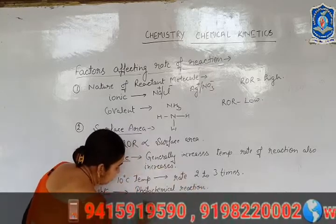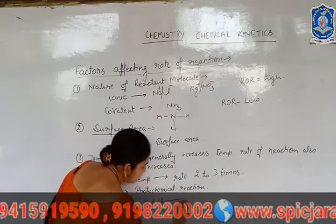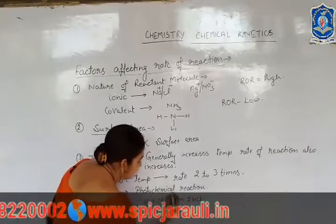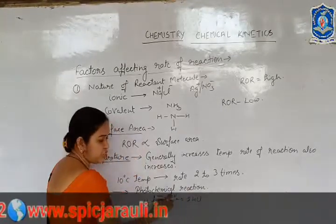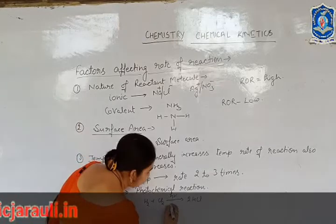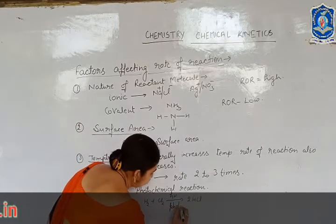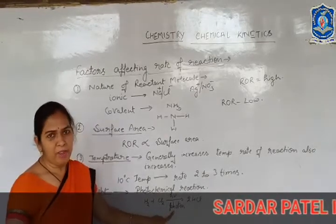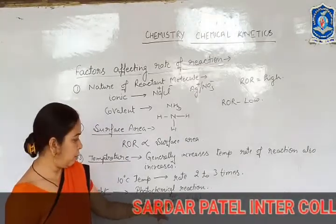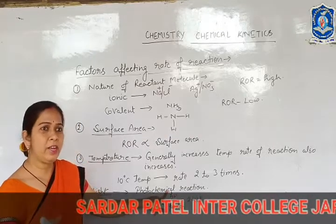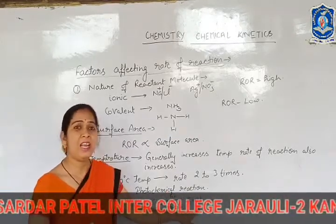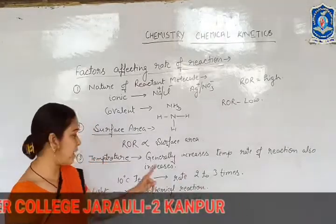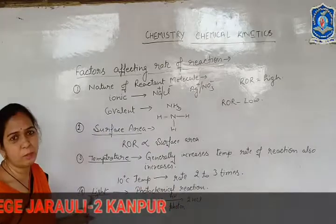For example, H2 plus Cl2 gives 2HCl. This reaction proceeds in the presence of hν, which is the energy of a photon. When we increase the number of photons, the energy increases and the rate of reaction automatically increases. These reactions are known as photochemical reactions, and hence the rate of reaction also depends upon light.